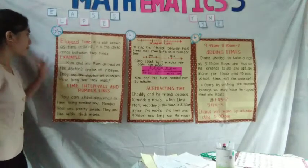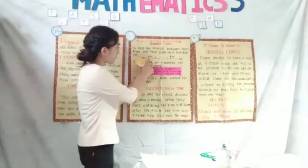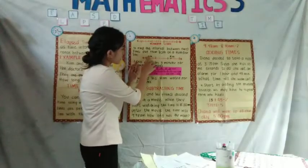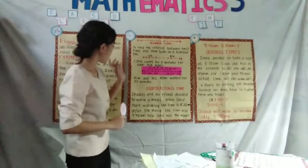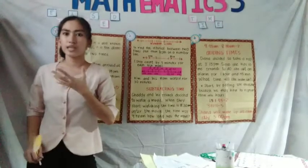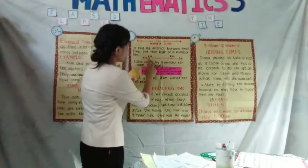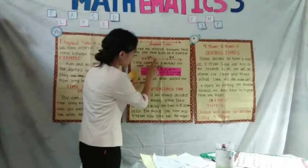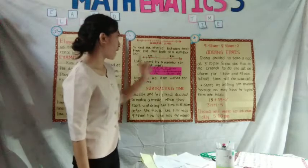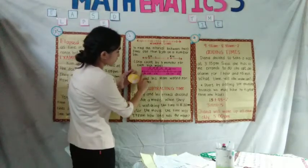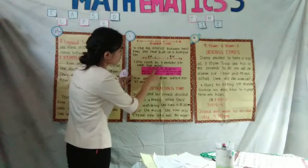As you see, the lines here, the small lines here, is what you call tick marks. So to find the interval between two times, plot them both on the number line. So let's use this problem. When Kim and his mom arrived at the office at 2:05 PM, we have to plot the arrival time of Kim and his mom. So when they see the doctor, it is already 2:35. So we are using five-minute tick marks. So 2:05 to 2:10, we have to jump at 2:15, 2:20, 2:25, until we reach at 2:35 PM.